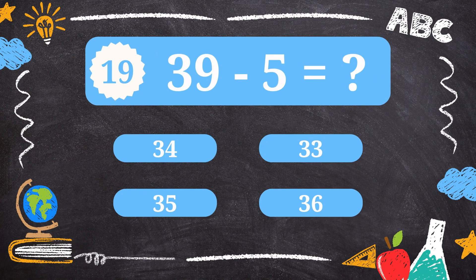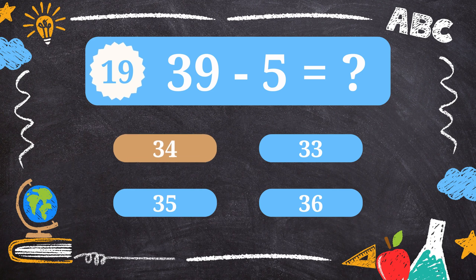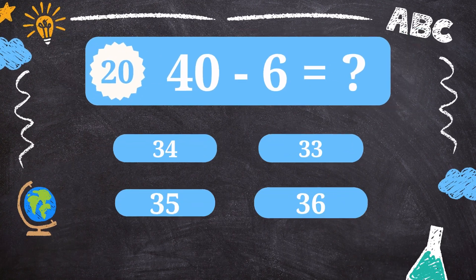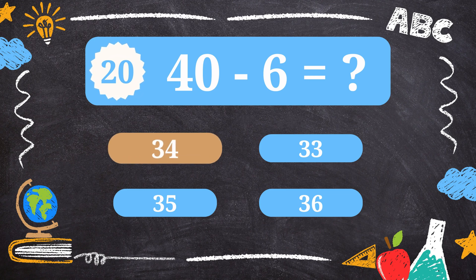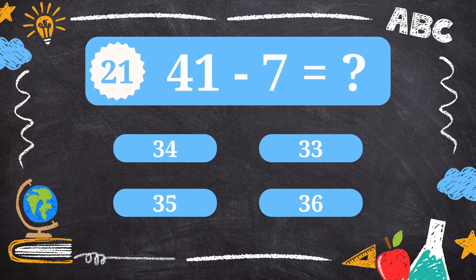Question 19. What is 39 minus 5? 34. Question 20. What is 40 minus 6? 34. Question 21. What is 41 minus 7? 34.